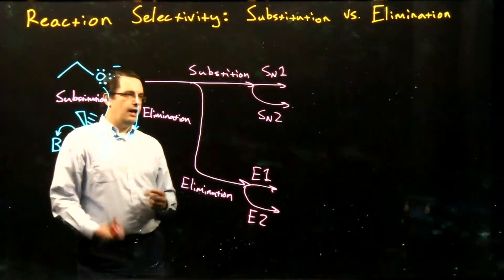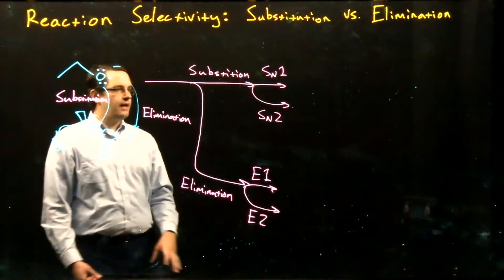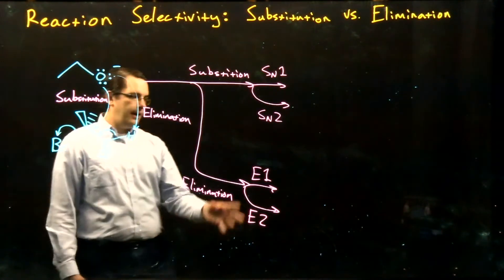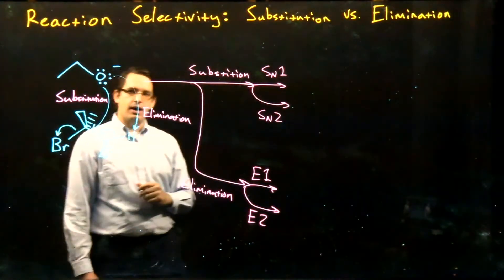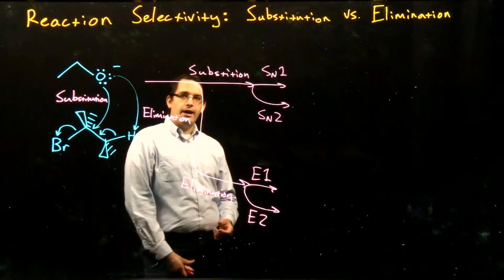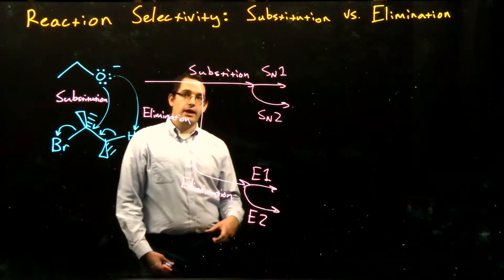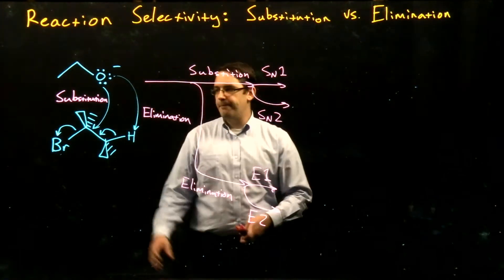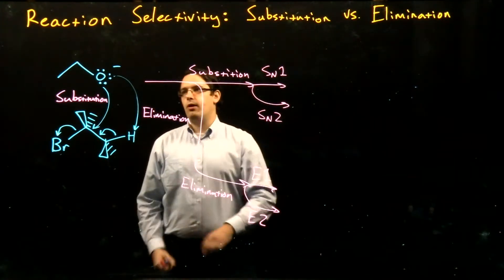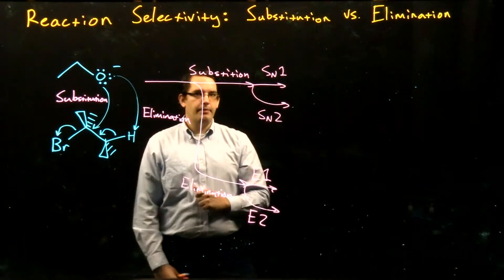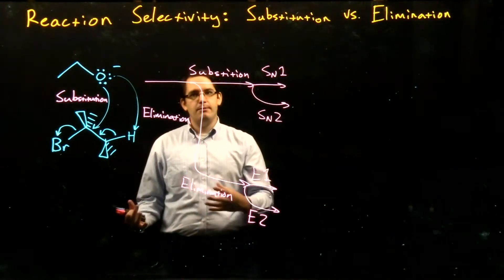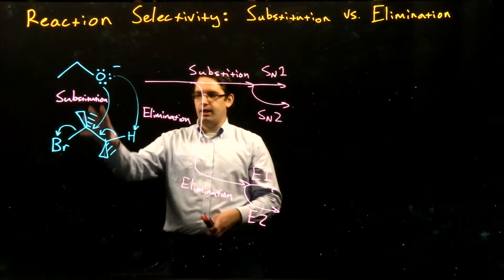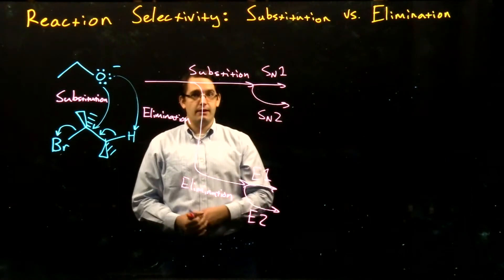So essentially, our alcohols and alkyl halides have four different menu options, and they're going to need to use different factors to choose between these different options. In the case of our alcohols and alkyl halides, it will be using factors like solvent, the structure of our alkyl halide or alcohol, or the strength of our nucleophile or base — making a similar decision to the ones we make, but using more molecular-based factors in order to reach that decision.